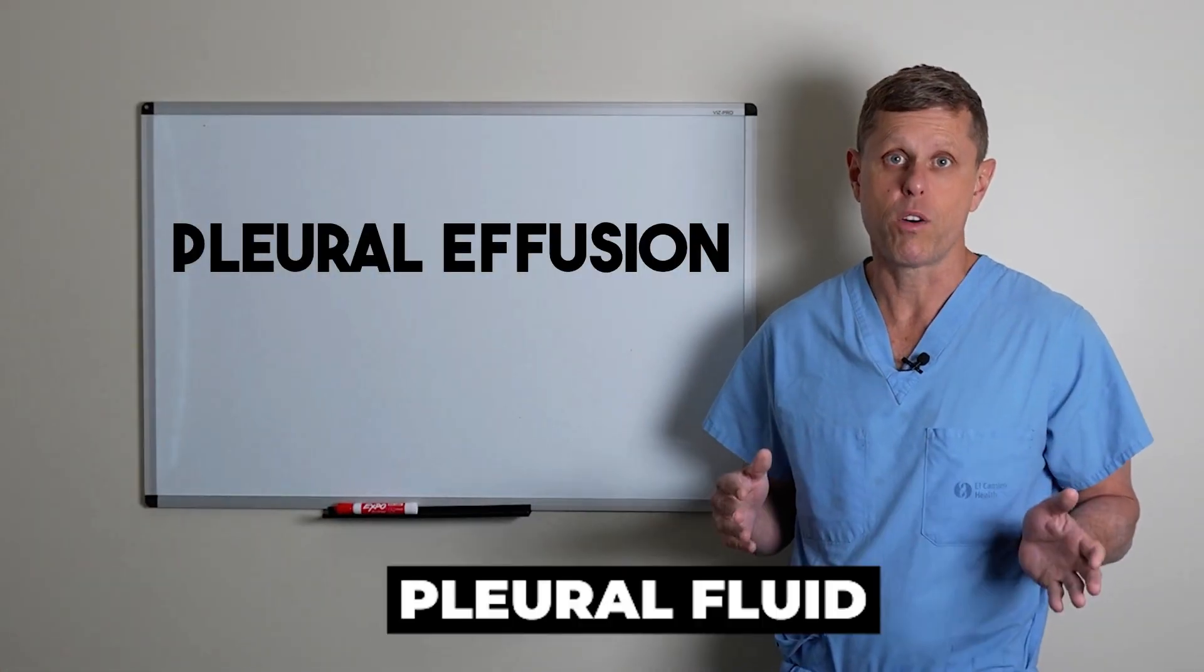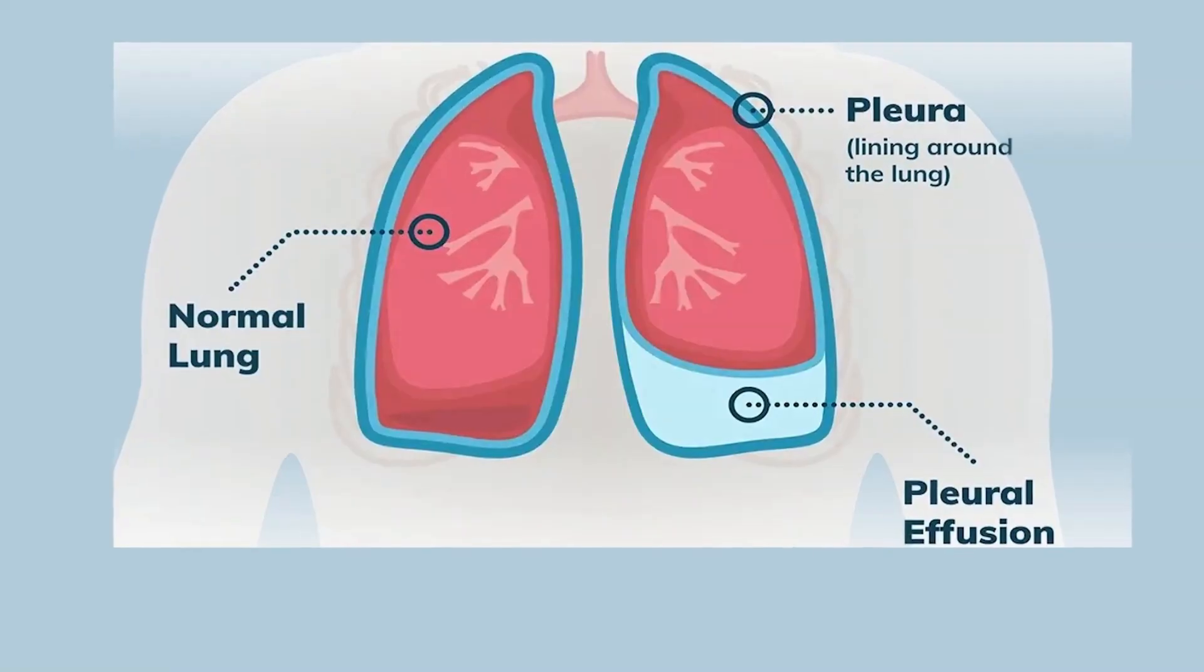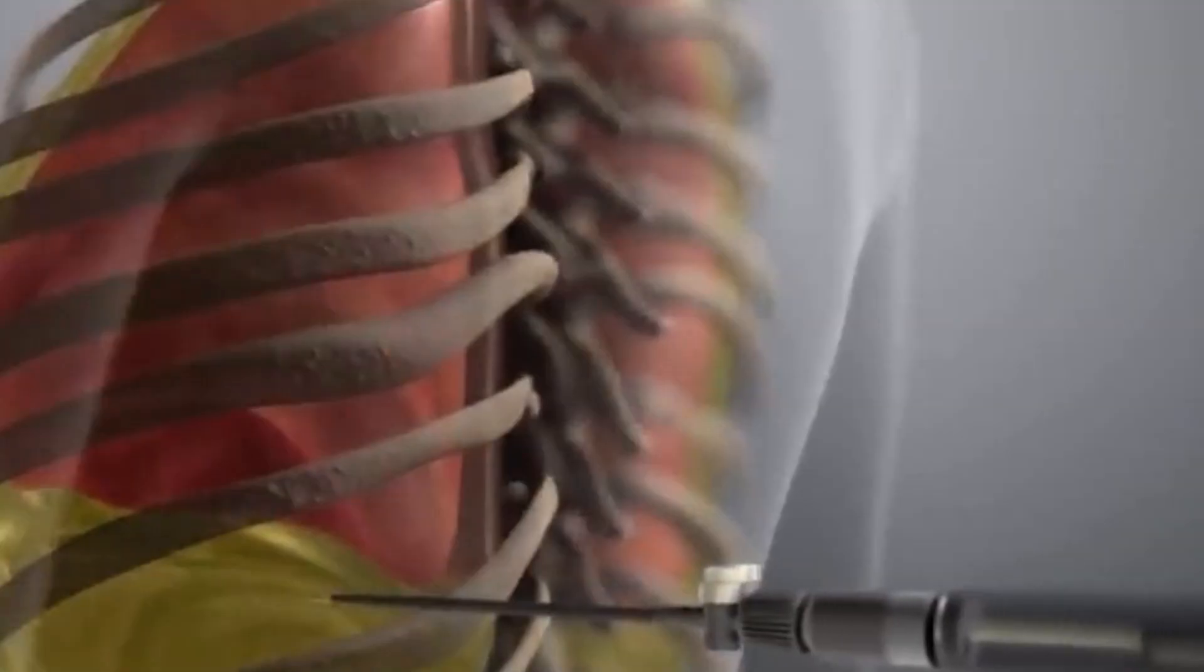In this video I'm going to be talking about pleural fluid, which is accumulation of fluid between the lung and the chest wall that can cause shortness of breath. Specifically, I'm going to talk about the procedure we do to remove that fluid, called thoracentesis.